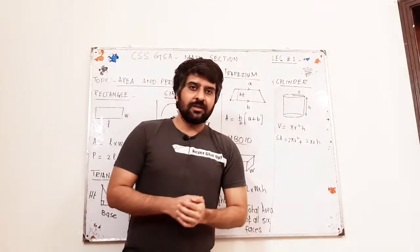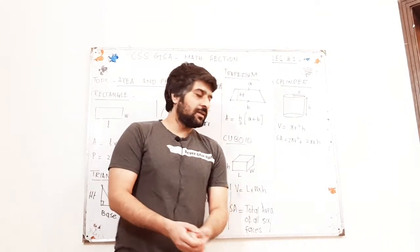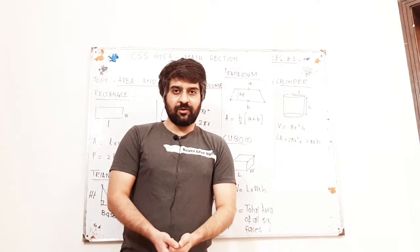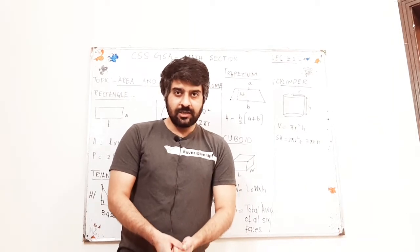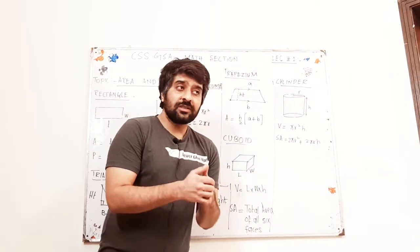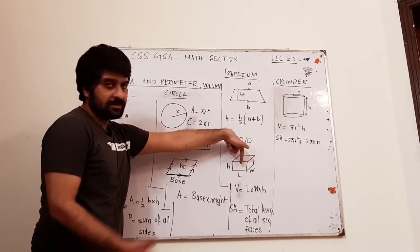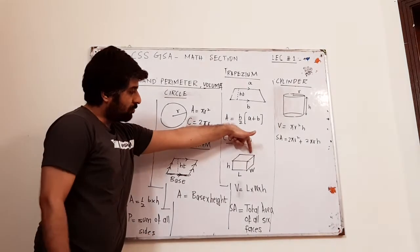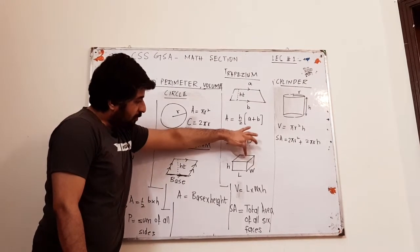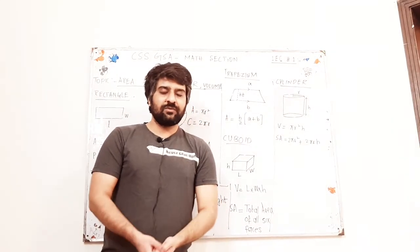The next shape is cuboid, a 3D shape where you have a different length, width and height. The volume of a cuboid is length multiplied by width multiplied by height. The surface area of a cuboid can be obtained by adding the area of all six faces: one face and one at the back make 2, plus one on each side makes 4, plus the top and bottom make 6. Calculate the area of all of them and add them to get the surface area of the cuboid.